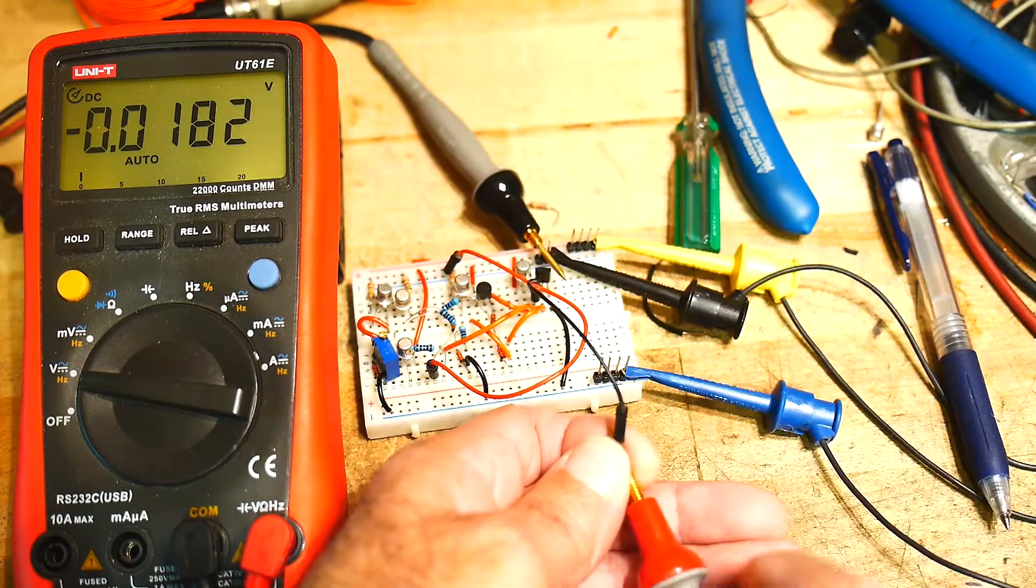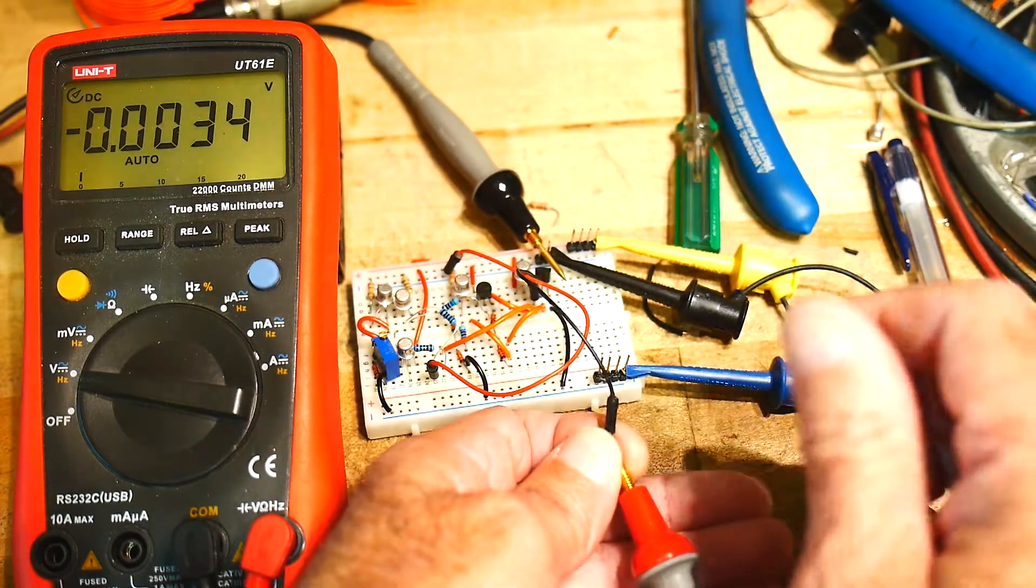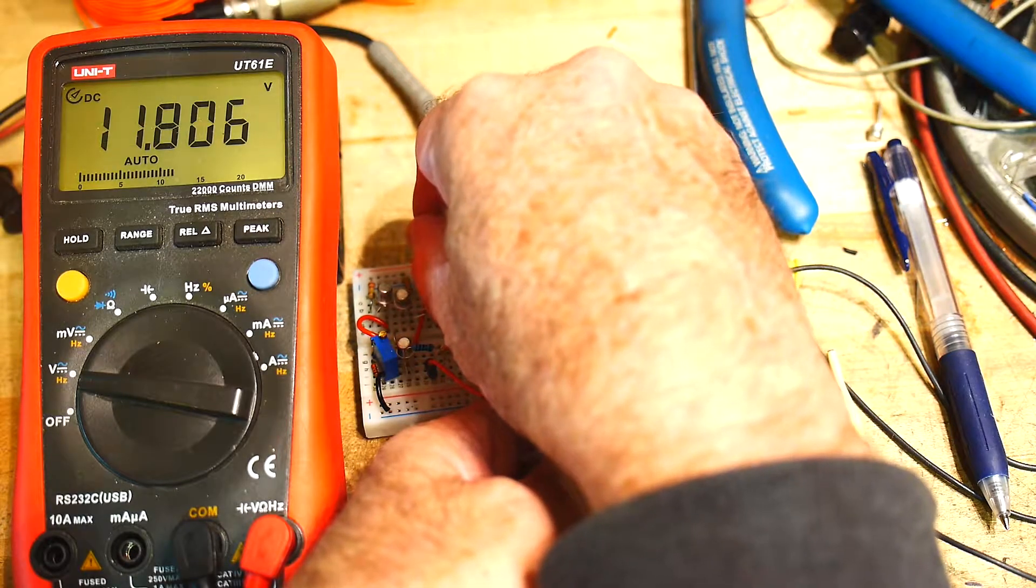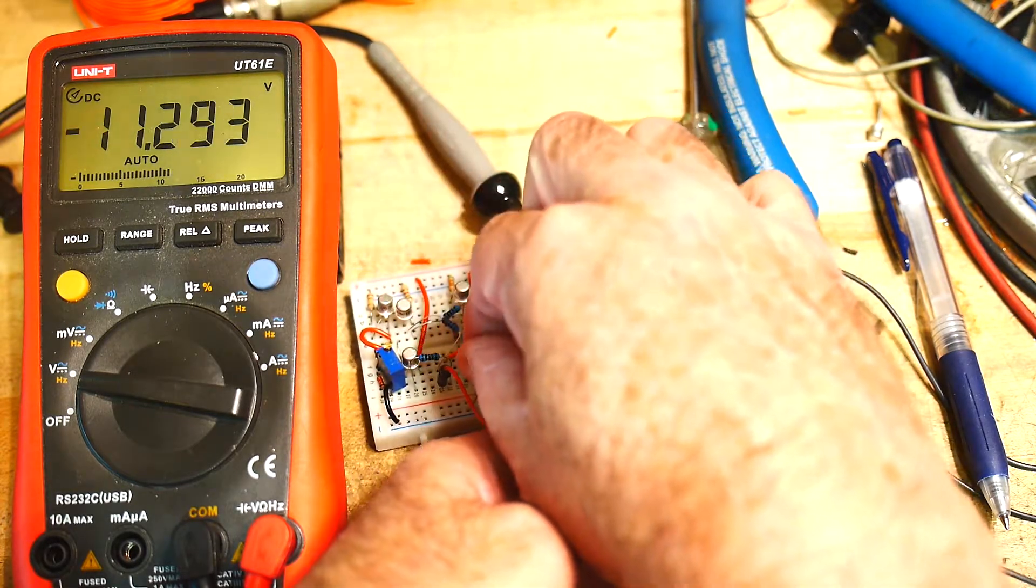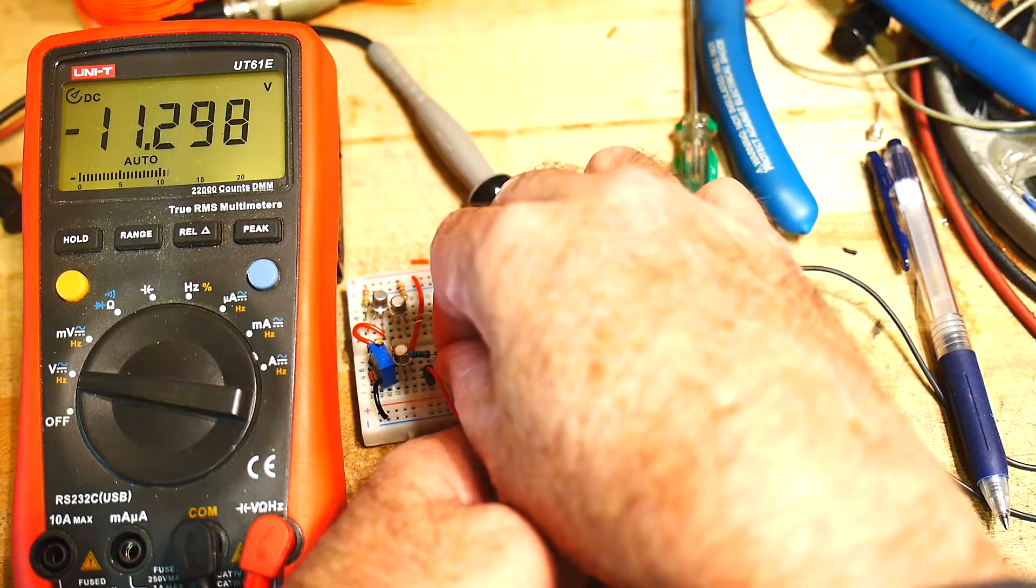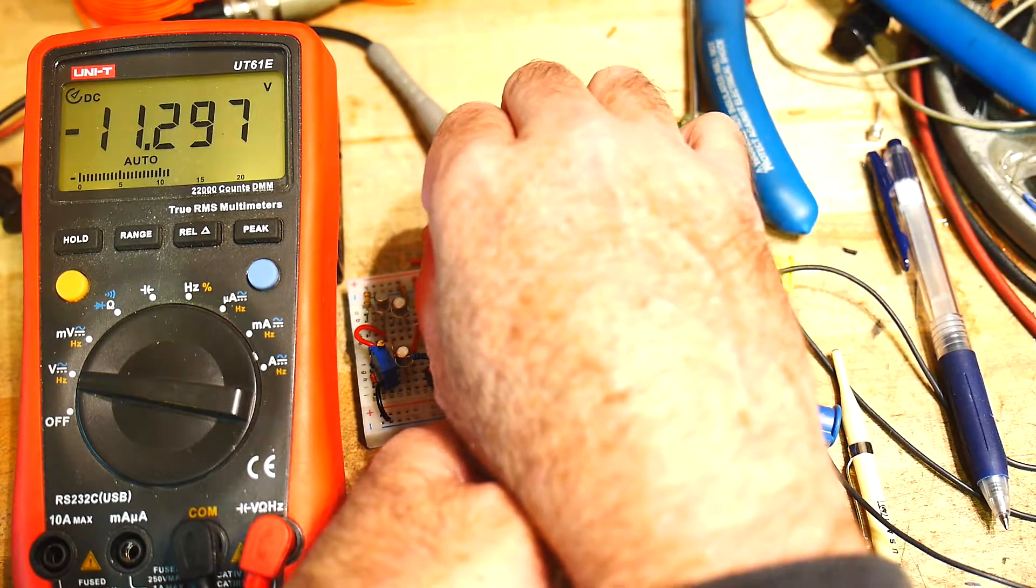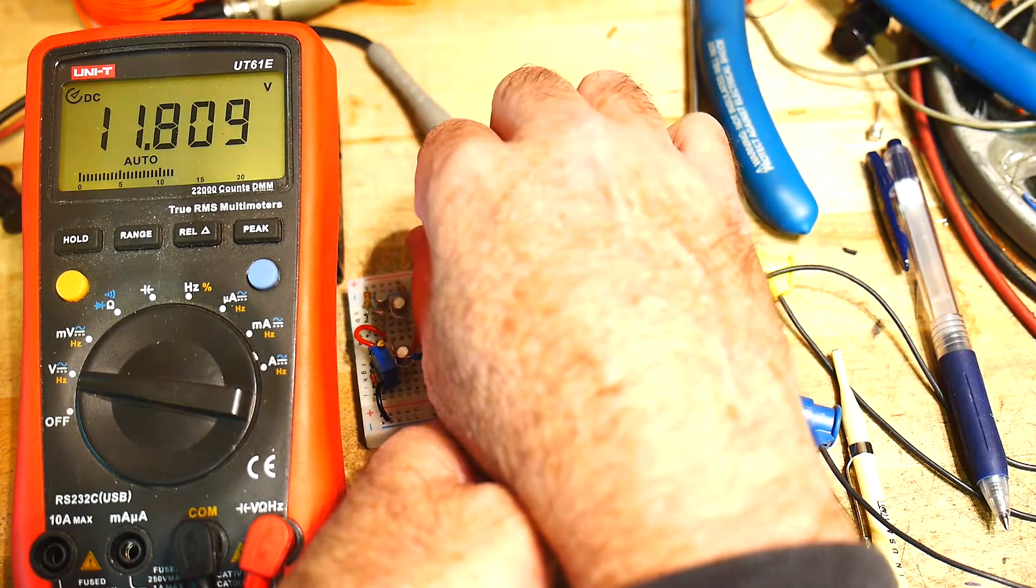So 0.01... we'll say 0.01 is close enough. Let's take the input and connect it to +12V. Hey, look at that! Now we're getting 11.8. I hit it to -12V, we get -11.2. So it doesn't work rail to rail, as most op amps don't, at least in the old days.